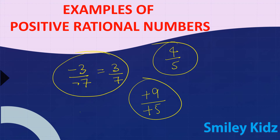Here, in the rational number 4 by 5, if you have observed, I did not give any sign — that means it is positive itself. So we can conclude that if the numerator and denominator both have the same sign, then they are positive rational numbers.